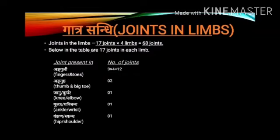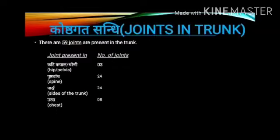Continuing the limb joint breakdown: Gulpha and Manibanda (ankle and wrist) — 1 each; Vankshana and Skandha (hip and shoulder) — 1 each. Prushthagracha Sandhi — joints in the trunk — 59 joints total. Kati, Kapala, and Soni — 3; Prushthamansa — 24.